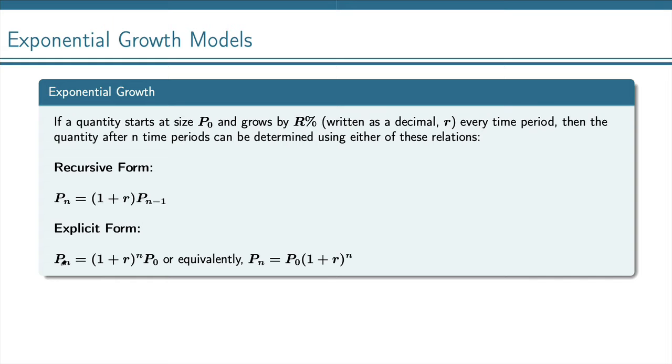And the explicit form, which we can write as P sub n equals 1 plus r to the n times P0, or you can flip around the P0 and put it first, which is a more standard form that we generally use.